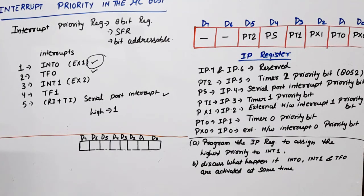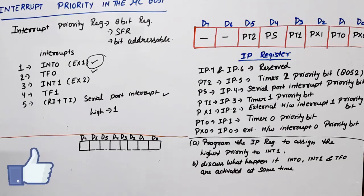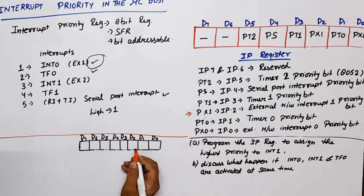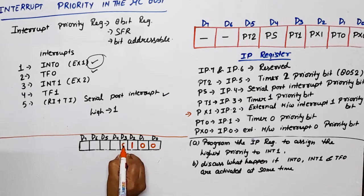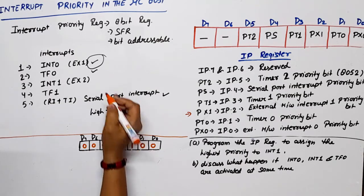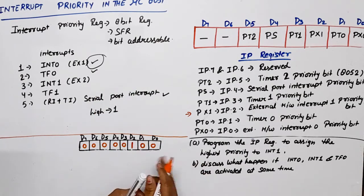Now we will discuss one question: program the IP register to assign the highest priority to INT1. If we want INT1 to have the highest priority, we set the respective bit to 1. INT1 refers to external hardware interrupt 1, so we need to identify which bit in the IP register is responsible for it — that is PX1.